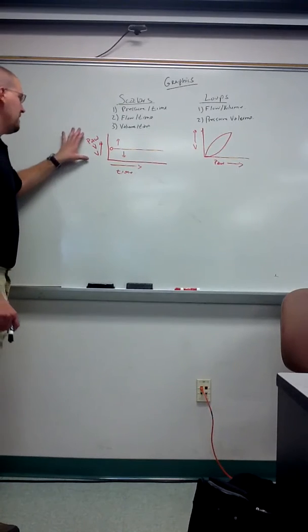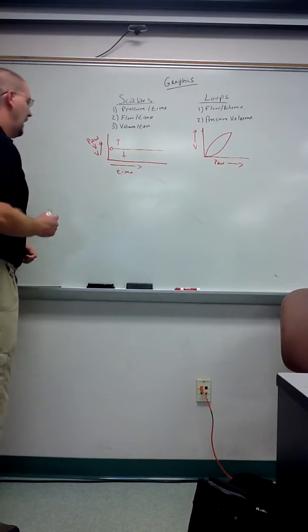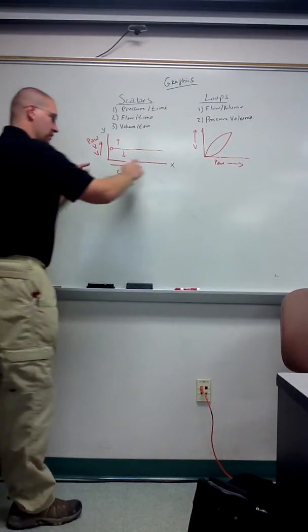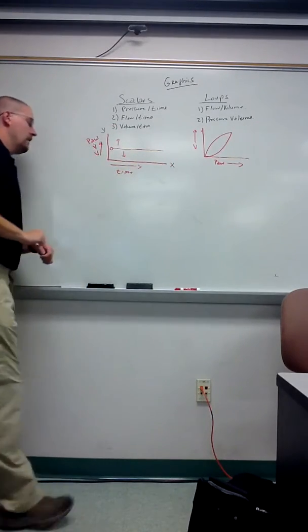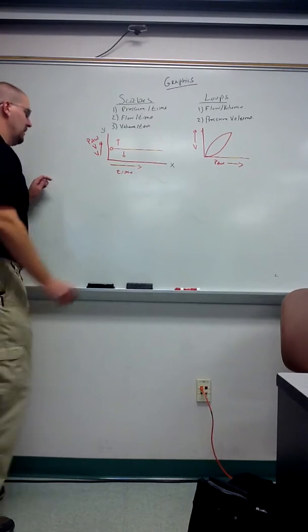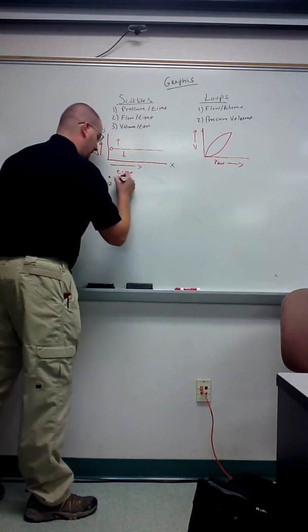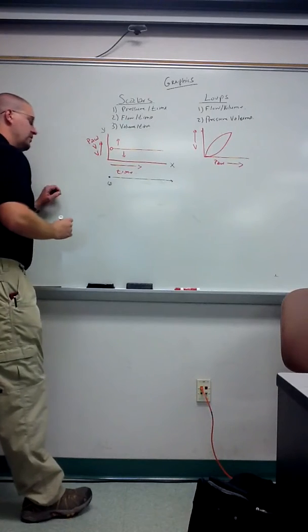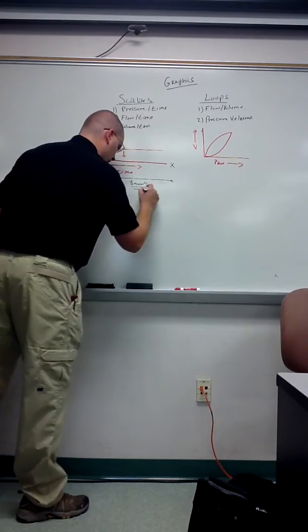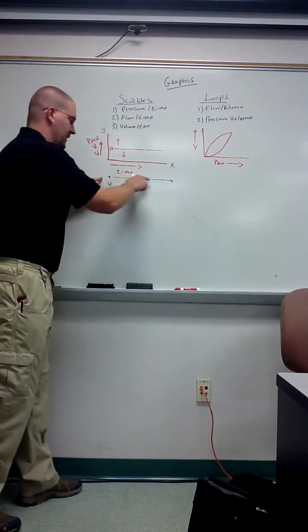When we look at the basic setup of a scalar, we'll start over here on scalars. I have an X and Y axis. X being horizontal and Y being vertical. The X axis will always be time. You can think of this as zero time to the left and then time progresses to the right, generally in seconds.